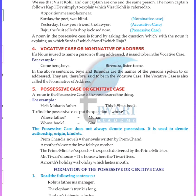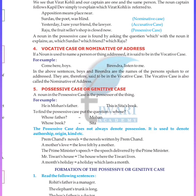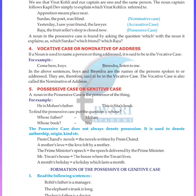Fourth: vocative case or nominative of address. If a noun is used to name a person or thing being addressed, it is said to be in the vocative case. For example: Come here, boys. Birendra, listen to me. In these sentences, boys and Birendra are the names of the persons spoken to. They are therefore in the vocative case, also called the nominative of address.